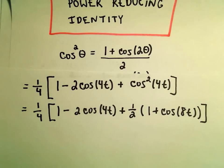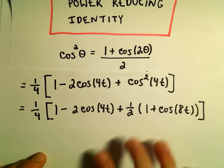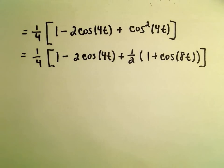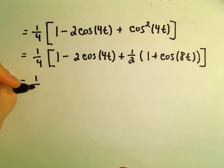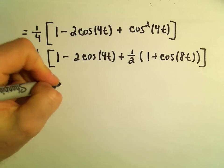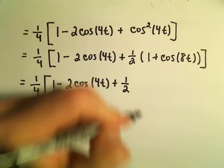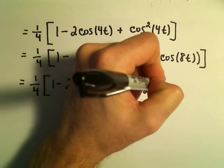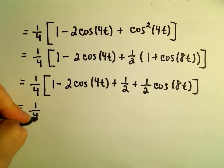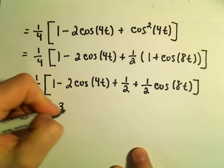At this point we've basically reduced it. Notice all of our trig functions are simply to the first power, and that's what we're shooting for. For those of you taking calculus, this is something that's important — a lot of times you have to reduce these powers to make things more manageable. So I'm going to distribute the 1 half out, giving us 1 half plus 1 half cosine of 8t. We've got 1 plus 1 half: making that 2 over 2 plus 1 over 2 gives us 3 over 2.